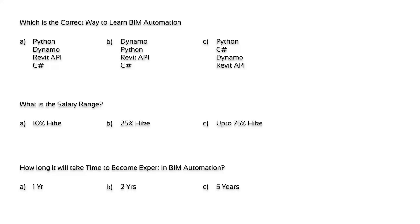Whether you're aware of it or not, doesn't matter - choose your option. Praveen says B: Dynamo first, then Python, then Revit API, then C#. Maruti also says B. Rajesh is also B.